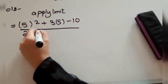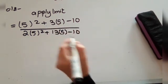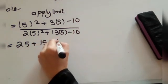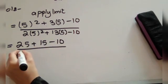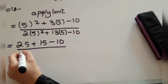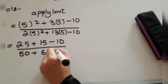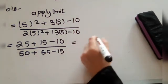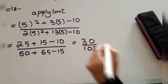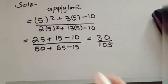If we substitute, the numerator becomes 5 squared plus 2 times 5 minus 10, equals 25 plus 15 minus 10. The denominator is 2 times 5 squared plus 13 times 5 minus 10, equals 50 plus 65 minus 15.